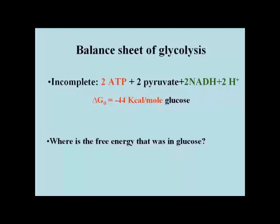The 2 ATPs account for a capture of approximately 15 kilocalories of the free energy once in glucose. We end up with 2 molecules of pyruvate, as well as 2 molecules of NADH, along with 2 protons.